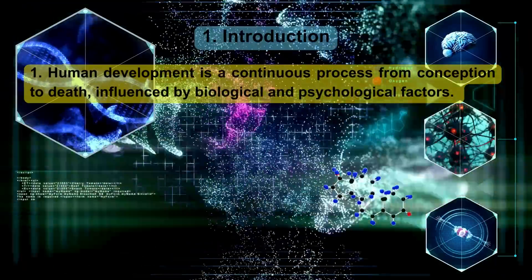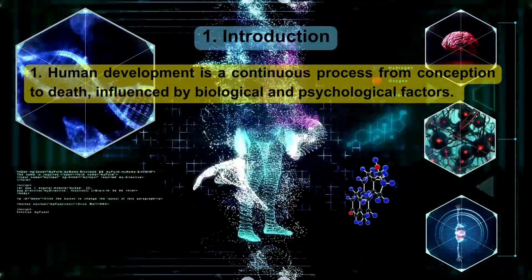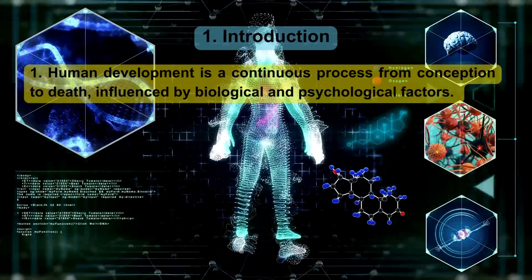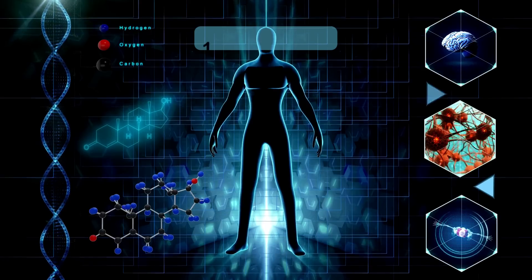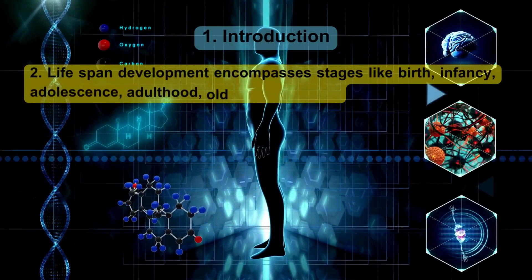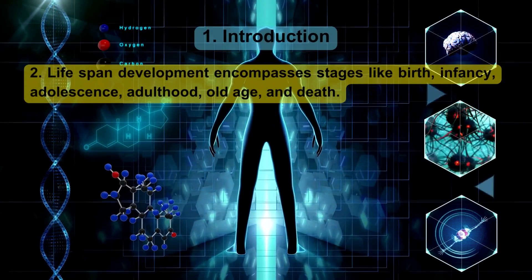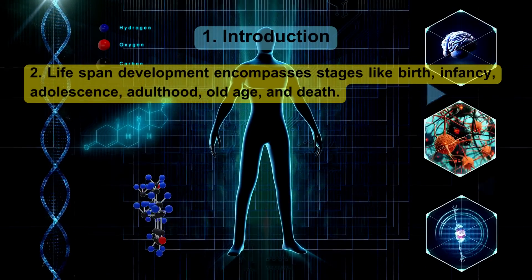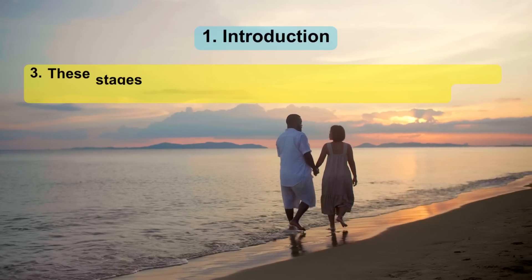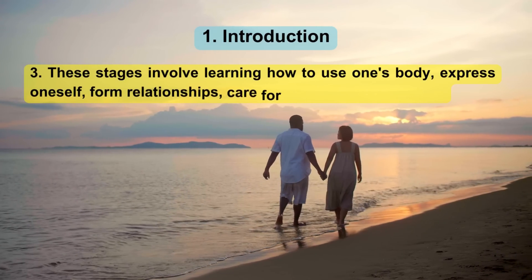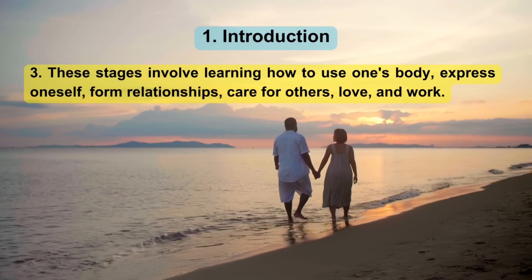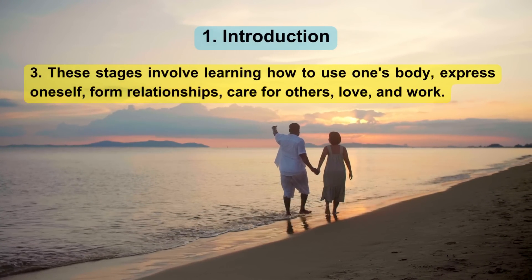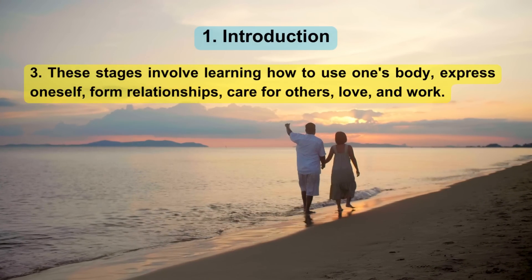Introduction. Human development is a continuous process from conception to death, influenced by biological and psychological factors. Lifespan development encompasses stages like birth, infancy, adolescence, adulthood, old age, and death. These stages involve learning how to use one's body, express oneself, form relationships, care for others, love, and work.